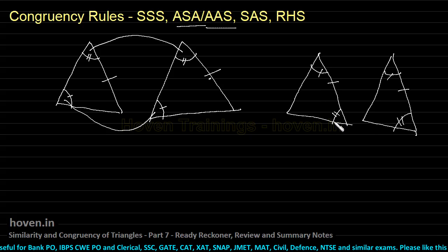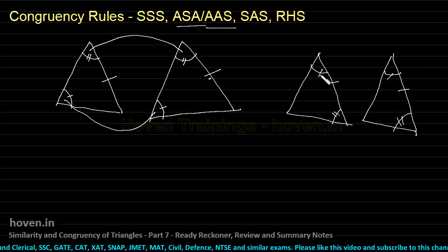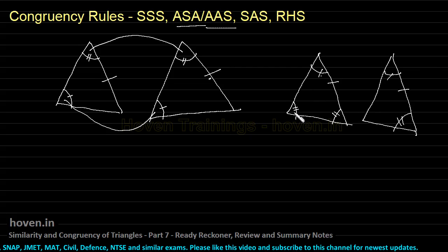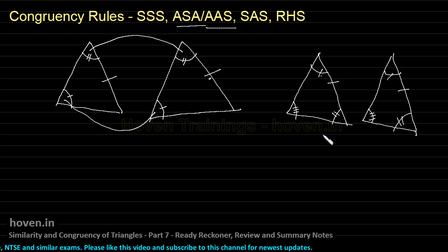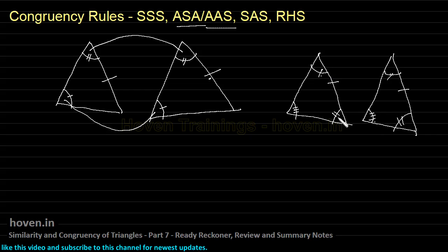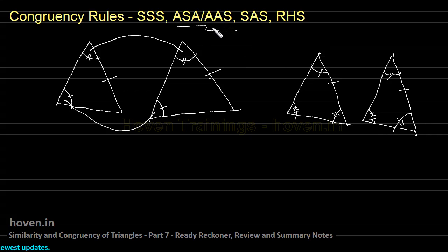The angle-side-angle rule is just another form of the AAS rule. If this angle equals this and this angle equals this, then the third pair will obviously be equal because the sum of angles of any triangle is 180 degrees. So if a pair of triangles is congruent by the AAS rule, it is also congruent by the ASA rule, and vice versa.